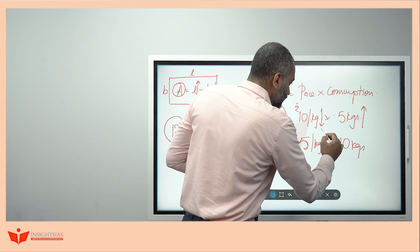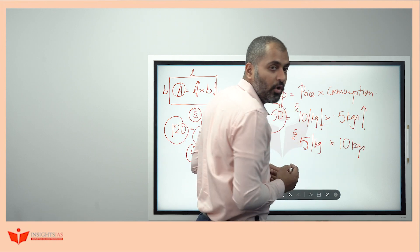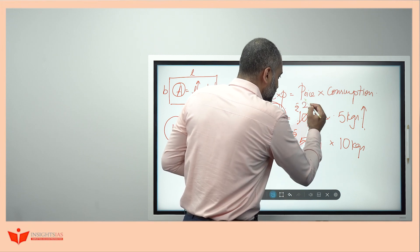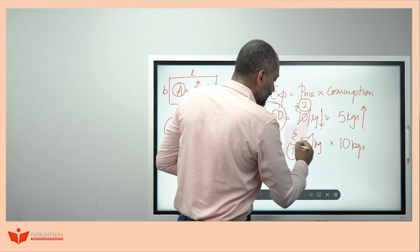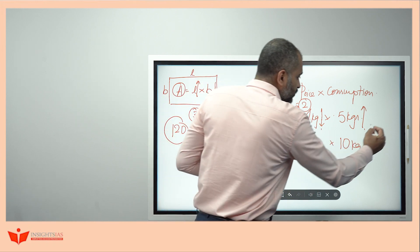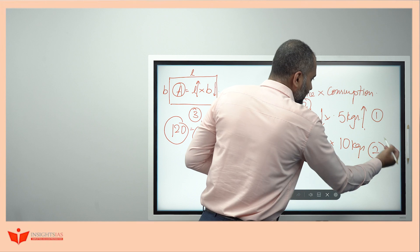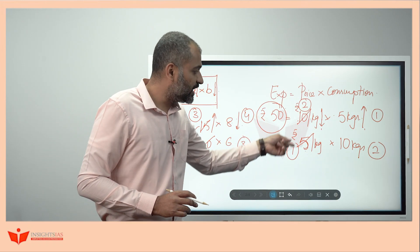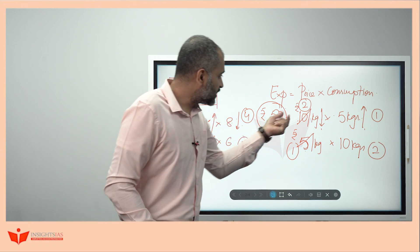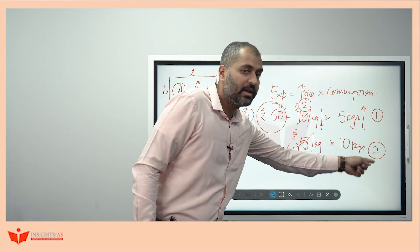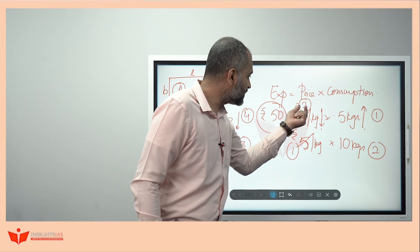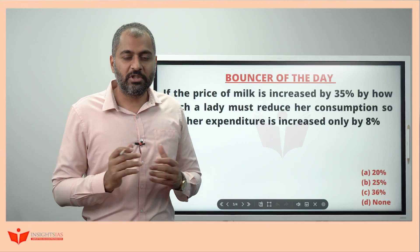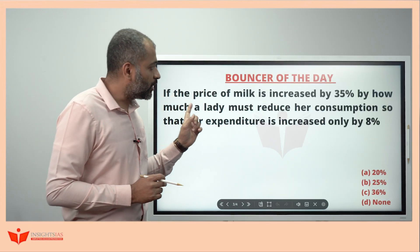If this goes down, this has to go up. See, 10 changes to 5 means, this is changing in the ratio 2:1. If this changes from 2 to 1, this has to change from 1 to 2. So, 5 and 10 are in the ratio 1:2 only. How they change? They change reciprocally. What is the reciprocal of 2 and 1? 1 and 2. Now, using the same technique, we'll solve this question now.